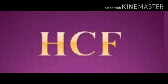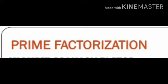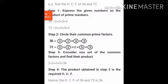To solve the SCF we have two methods: prime factorization method and division method. Our first point is the prime factorization method. In this method we have to solve it in four steps. First step: find the product of prime numbers. Second step: circle their common prime factors, then consider one set of the common factors and find their product. The product obtained in step three is the required SCF. Students, we will solve it with the help of an example.